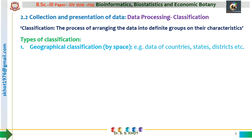The first method of classification is called geographical classification of data. This classification is based on the space from which the data is collected. For example, data may be classified as the data of various countries or various states in a particular country. In the COVID-19 pandemic situation, we are getting information from various states of the country and from various countries. This classification of data is called geographical classification.